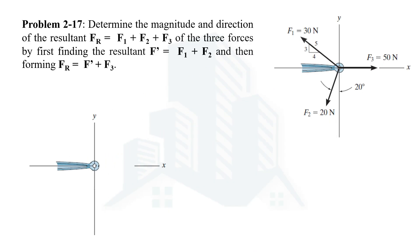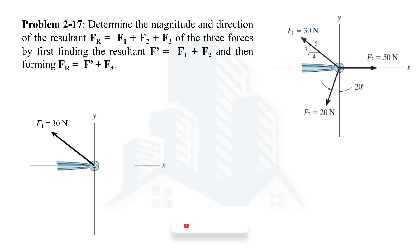Let's start with F1 and F2. F1 has a magnitude of 30 Newtons, but the angle with the positive x-axis is not directly given — it's given via a triangle. Using the tangent formula, tan(θ) = perpendicular over base = 3/4, so θ = tan⁻¹(0.75) = 36.87 degrees. This force makes an angle of 36.87 degrees with the negative x-axis.